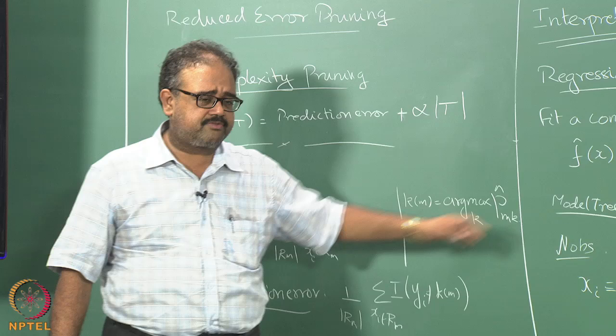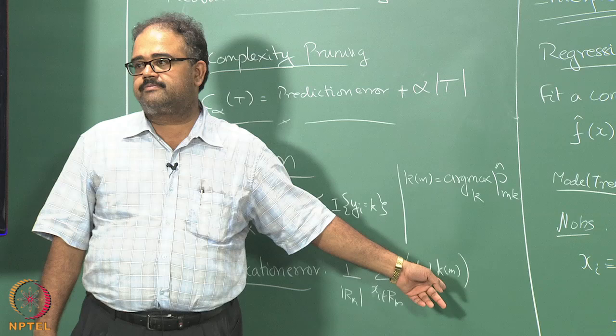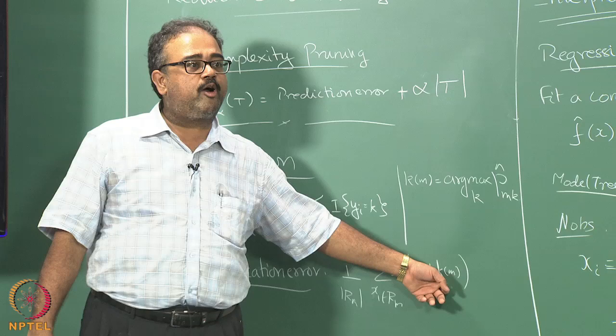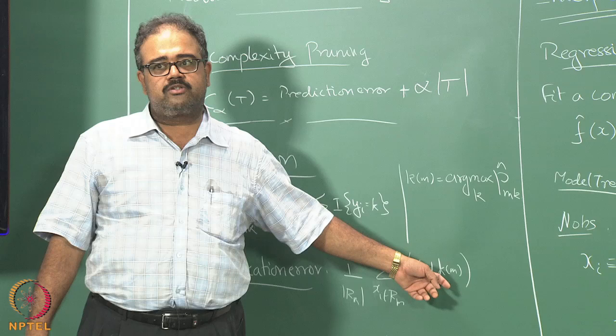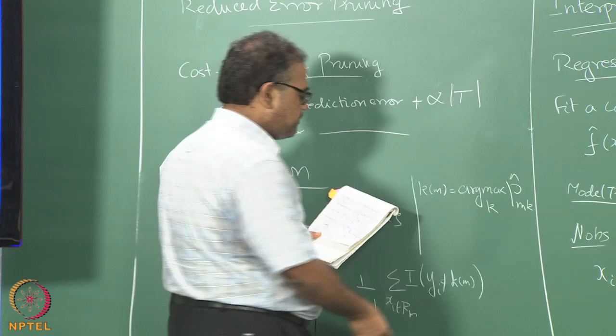The misclassification error counts all the data points in region M which do not have K of M as their label. For all data points in region M I will be outputting K of M as the label, so all data points in region M which do not have K of M as their true label are misclassified. Divide by the total number of data points to get the average misclassification error. Is there some way to simplify this?